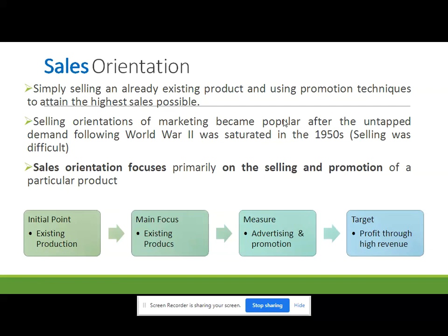So the initial point was existing production. The main focus was existing products, and the major effort was through advertisement and promotional activities. Their target was making profit through high revenues — selling existing products to get high revenue. That was the sales orientation.